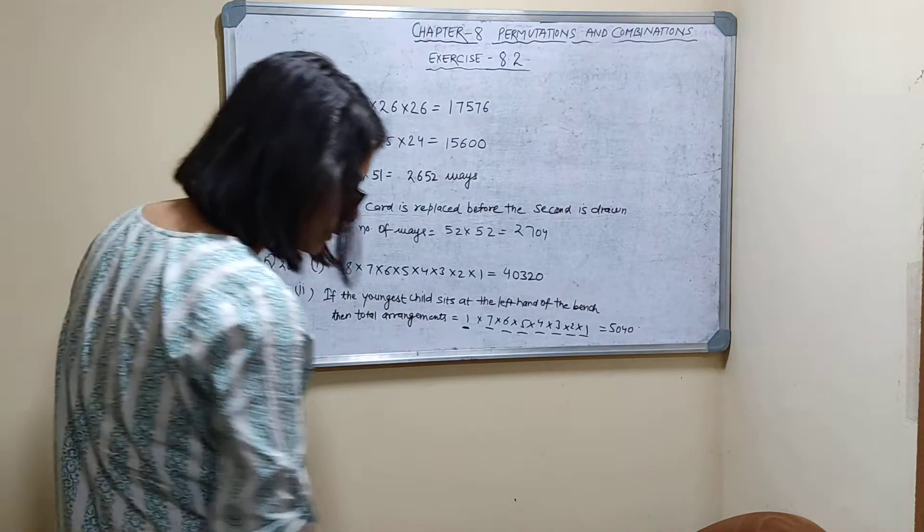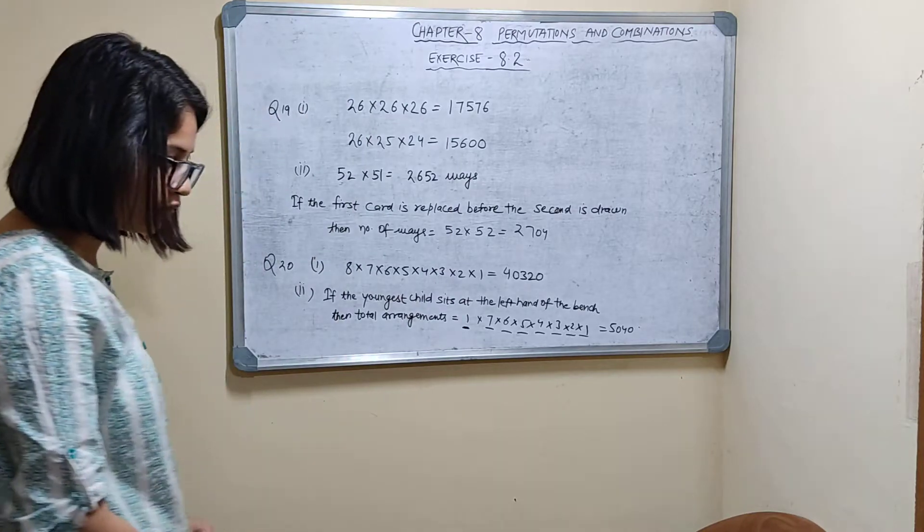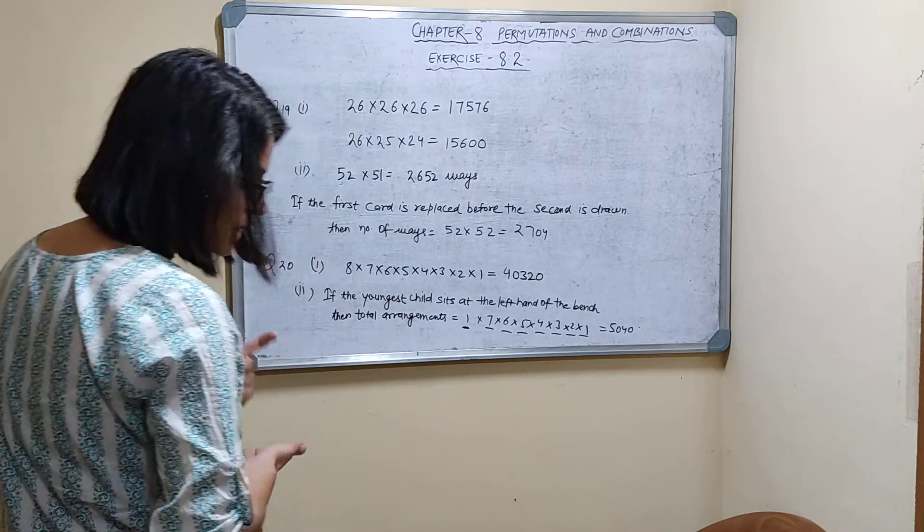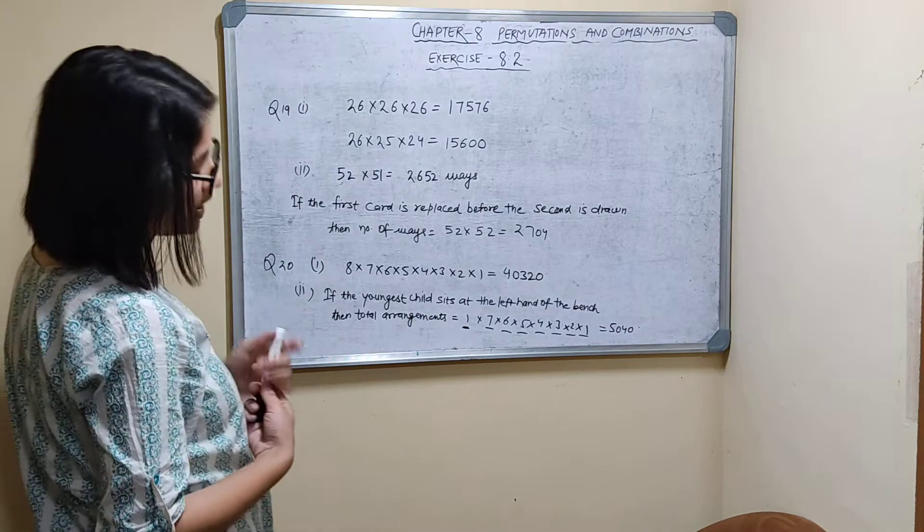Question number 19.1. How many words with or without meaning of three English alphabets can be formed? How many of these have all distinct alphabets?